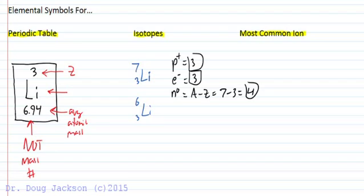What about if we have lithium-6 instead? Protons doesn't change. We still stay with 3. Electrons, we're going to stay with 3 because it's a neutral species. And then for the number of neutrons, it's going to be the mass number minus the atomic number, 6 minus 3 equals 3.